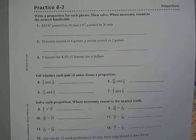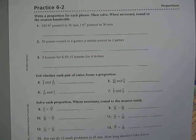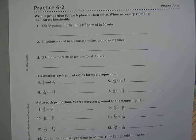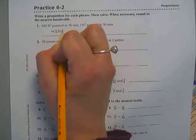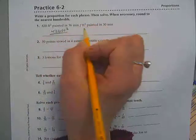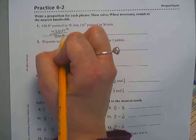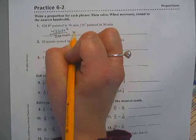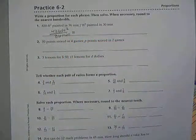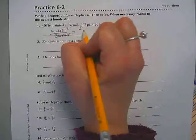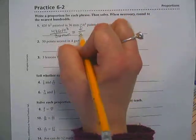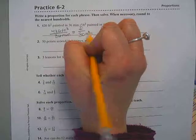So, yes Jack? We'll see how far we get. So we have 420 square feet painted in 36 minutes. We want to know how many square feet you can paint in 30 minutes.